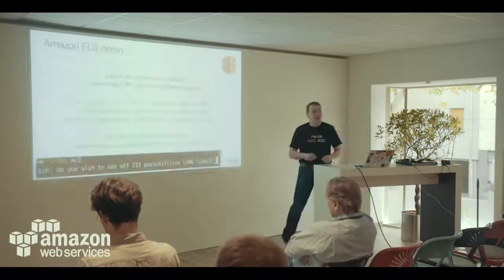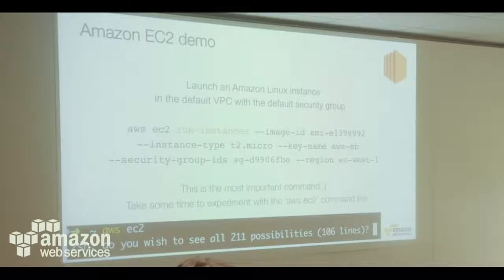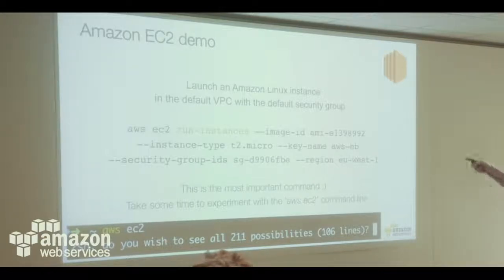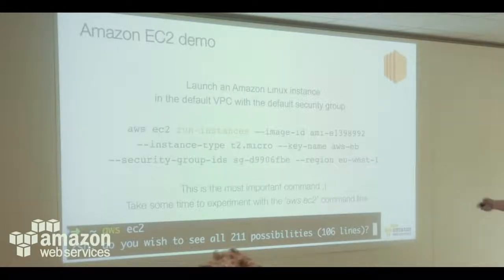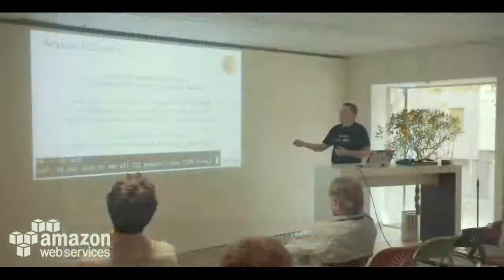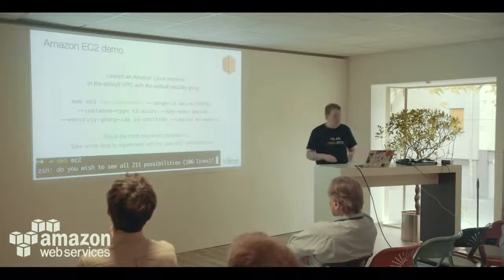How would you start an EC2 instance? You could go in the console and click, but serious people want scripts. This is how you do it with the AWS CLI. The command is 'aws ec2 run-instances'. You specify the image ID — the AMI, in this case our Amazon Linux distribution — the instance type T2 micro, an SSH key to connect, a security group ID which is the managed firewall feature, and the region where you want to start it — EU West, the Irish region.